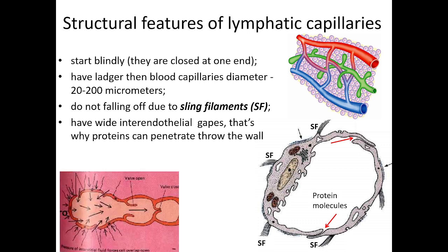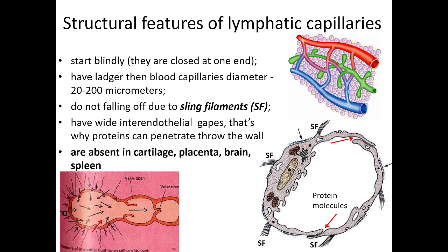This diagram shows a lymphatic capillary stretched due to sling filaments. Through endothelial gaps, liquid penetrates from the interstitial space inside the capillary along with protein molecules. The last feature: lymphatic capillaries are absent in cartilage, placenta, brain, and spleen.